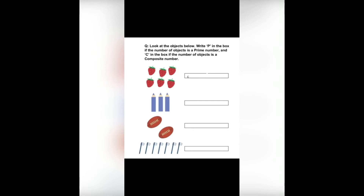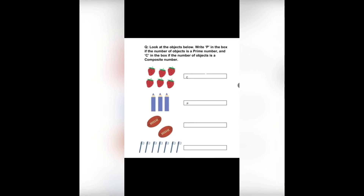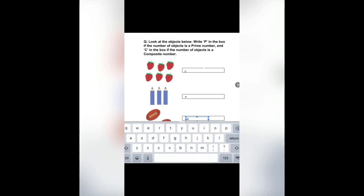Six is divisible by one, itself, two, and three — so it's a composite number. Let's count the pencils — it's three. Three is divisible by one and only itself, so three is a prime number. Two is also divisible by one and only itself, so two is also a prime number.